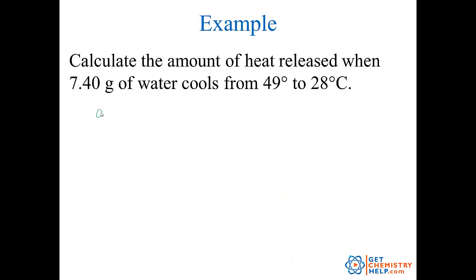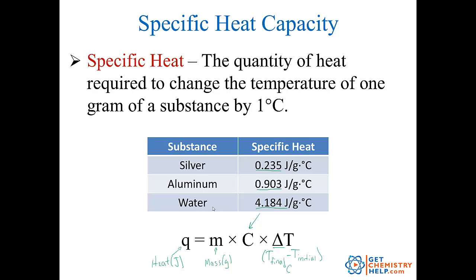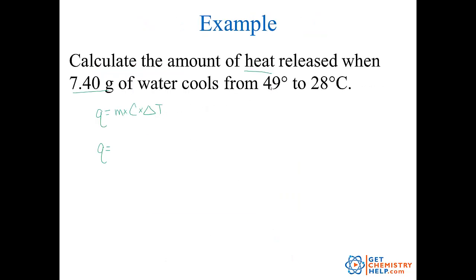So let's try an example and see how this works. Q equals MC delta T. Calculate the amount of heat released when 7.40 grams of water cools from 49 to 28 degrees Celsius. So which variable are we trying to solve for? Well, the amount of heat. So that's Q. So I'm going to solve for Q. So I need to know MC and delta T. M is the mass. So I got that right here. C I don't know on this problem, but it is a constant. So I can just look that up. And for water, we already said it's 4.184 joules per gram degrees Celsius.